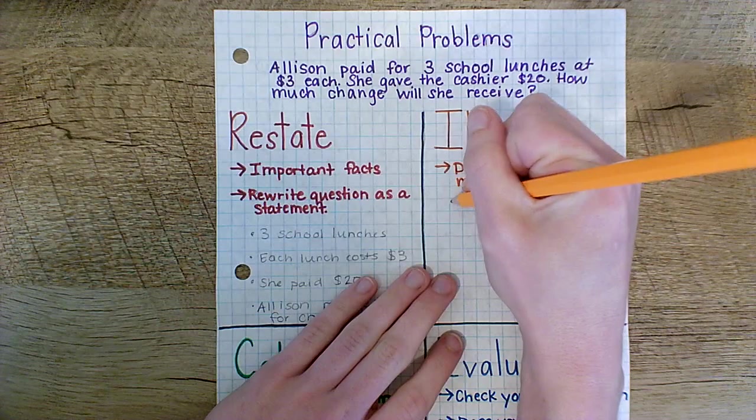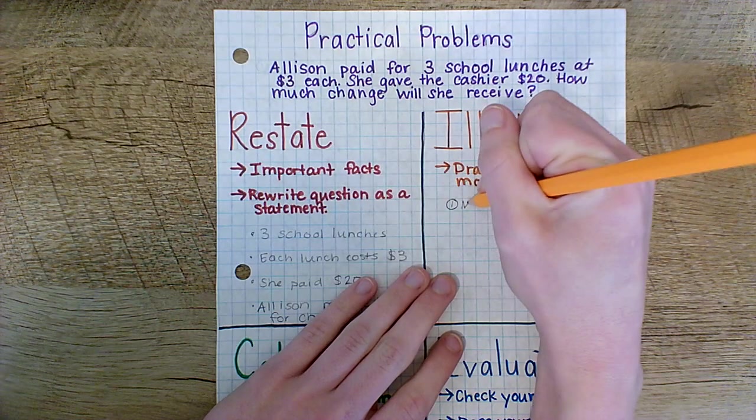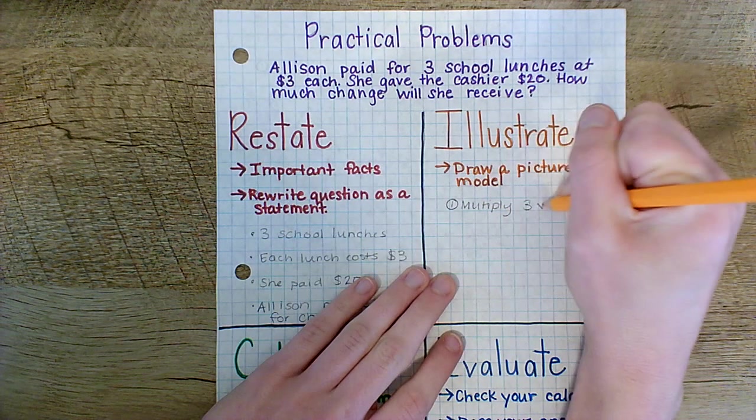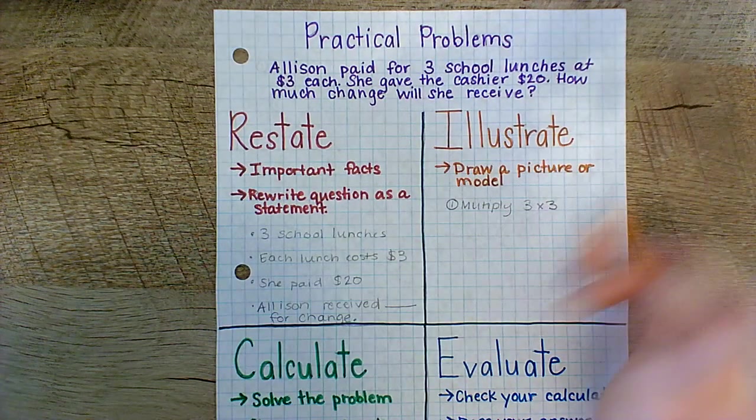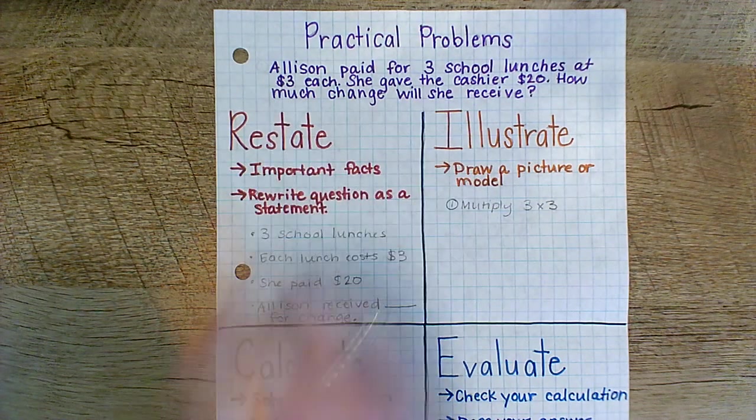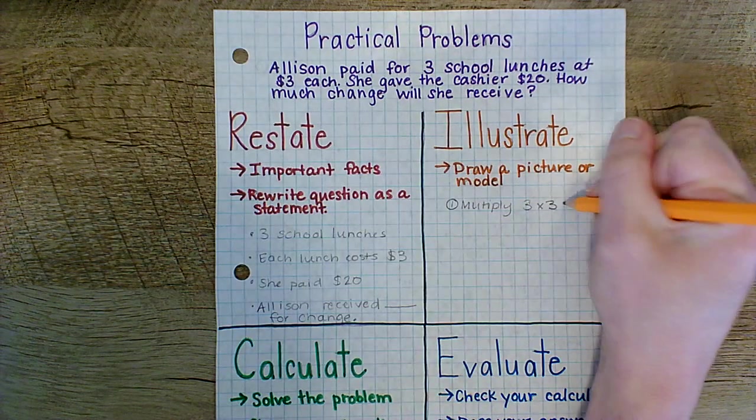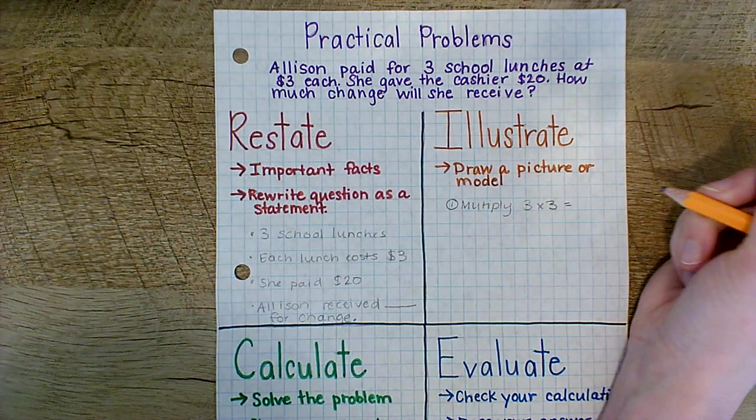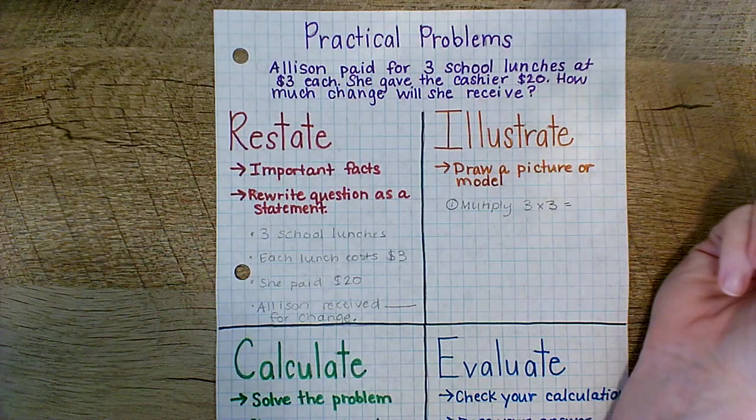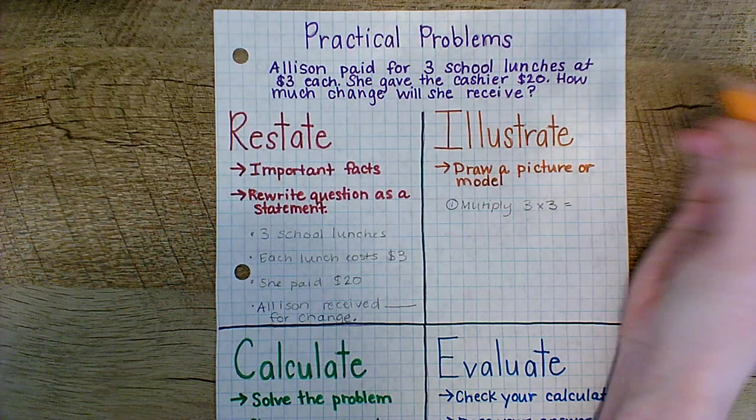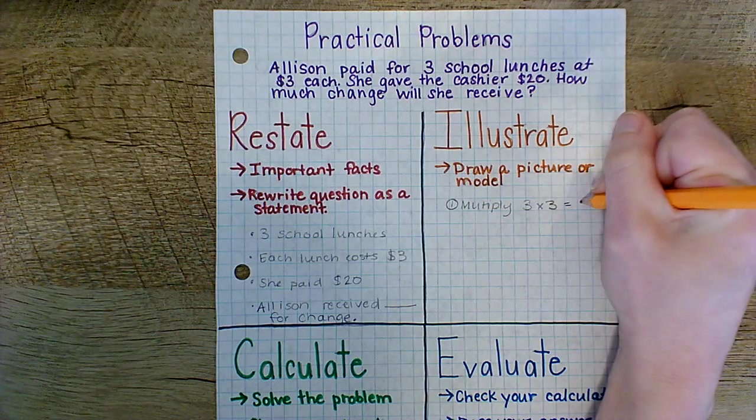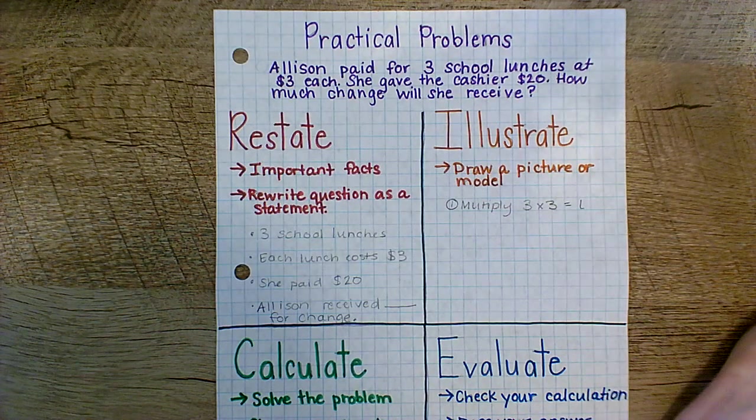So first, I know I need to multiply three times three because she has three school lunches at three dollars each. Now I'm going to go ahead and use a variable here because I don't know what that product is yet. I'm not trying to solve. I'm just identifying the steps. So I'm going to give this a variable of L for her lunches.